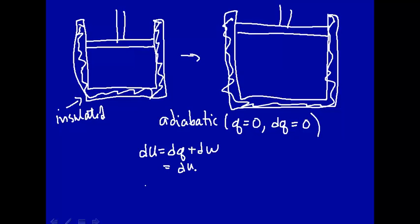This is just equal to dw. We're doing that because we're assuming that it's an adiabatic process. And let's put this equal to minus pdv. So we're assuming the only work we can do is pv work.